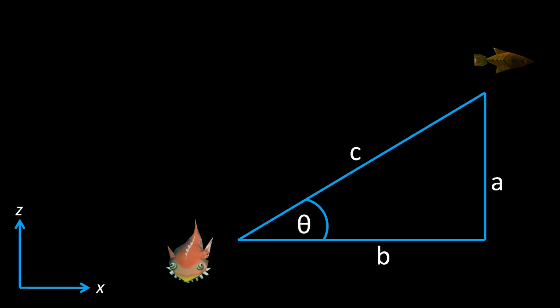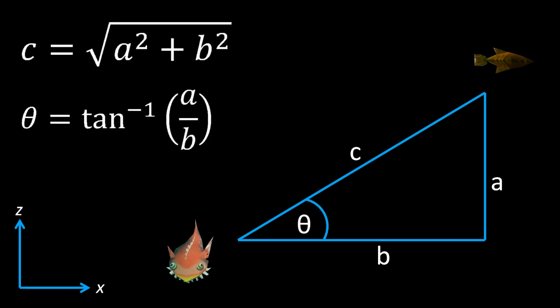I've drawn here a triangle on the horizontal plane, so we're looking down from above. We know a and b because we know the positions of the two fish — that's tracked by the game. What we need to calculate is c and theta, because that's what we'll need for adjusting the movement of the fish in the tank toward the one you've just dropped. We use Pythagoras' theorem to find the horizontal distance c, and the inverse tangent to find the angle theta.